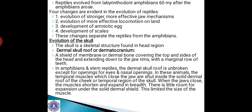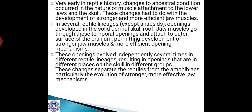Very early in reptile history, changes to the ancestral condition occurred in the nature of muscle attachment to the lower jaws and skull. These changes had to do with the development of stronger and more efficient jaw muscles, allowing them to wide open their mouths and consume prey larger than their own body size. The jaw muscles go through these temporal openings and attach to the outer surface of the cranium.